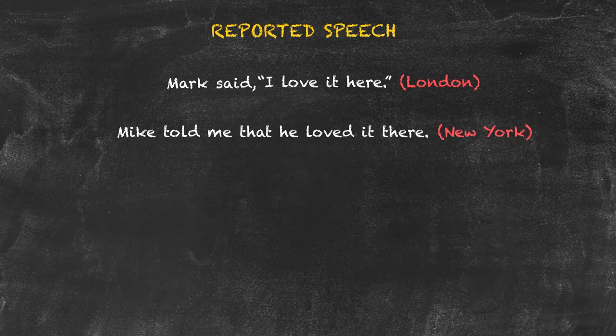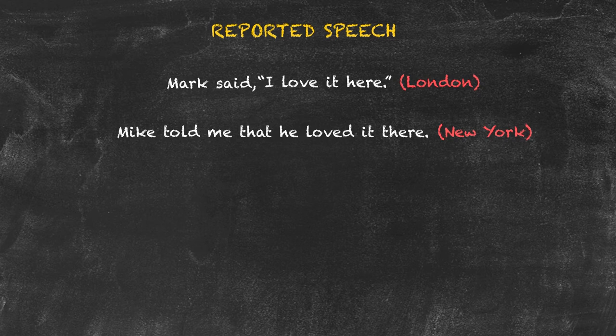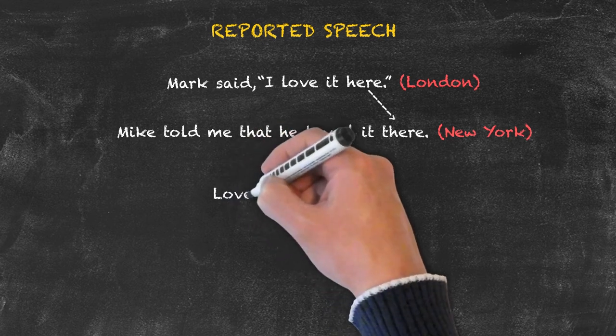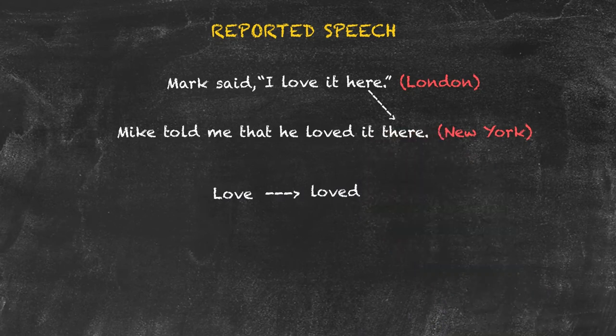One of the main issues we have to keep in consideration while reporting speech is that we want to indicate that the original speech was said in the past. The way we do that is to backshift the tense. So, take again our original statement: Mike said 'I love it here.' Not only do I need to switch 'here' to 'there' because now I'm in New York, I also have to indicate that it was said in the past, so I change 'love' to 'loved.' Now it ends up with the sentence being: Mike told me he loved it there.